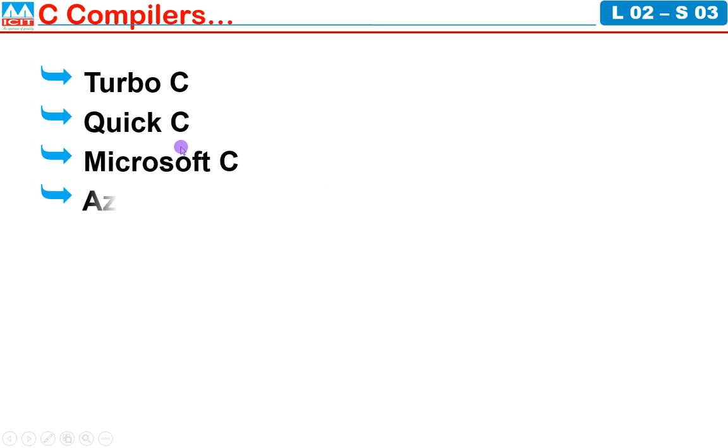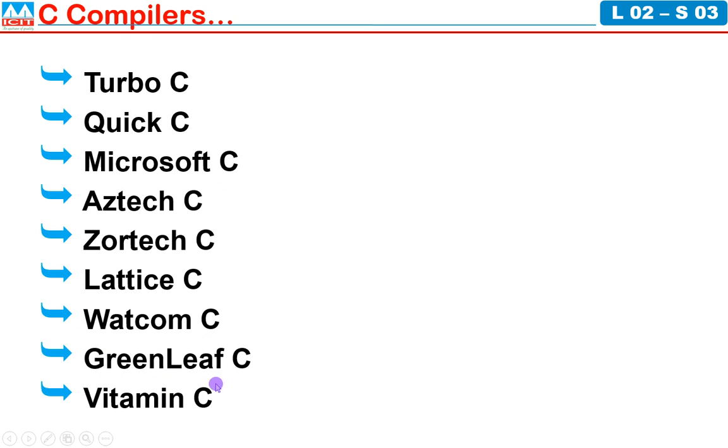C compilers - the heading is meaningful in plural number because there are so many C compilers: Turbo C, Quick C, Microsoft C, Aztec C, Jortec C, Lattice C, Whatcom C, Greenleaf C, Vitamin C - so many compilers. Out of these I am selecting Turbo C as my standard.